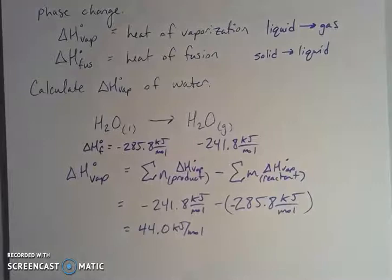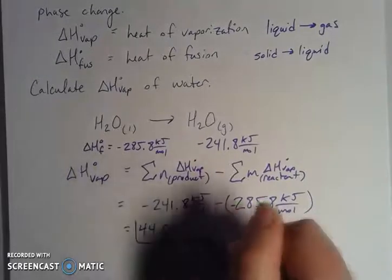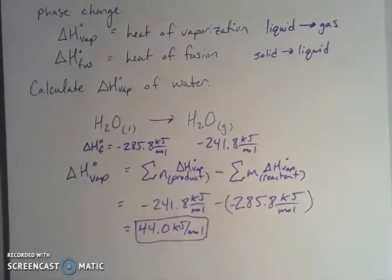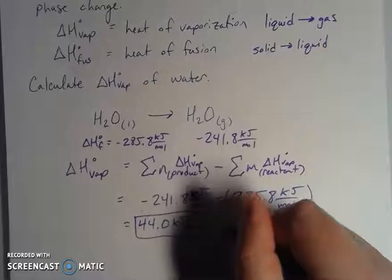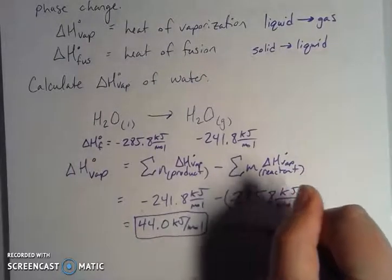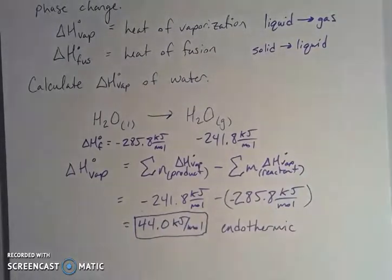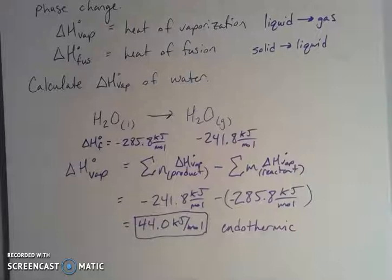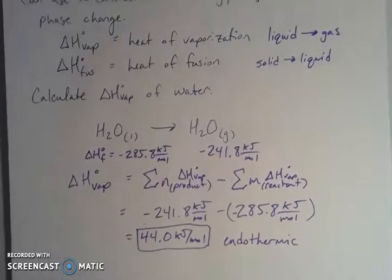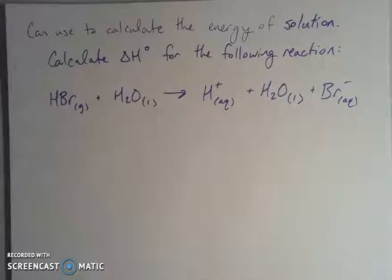For significant figures, I'm looking at the tenths place since we're adding or subtracting — the lowest number of decimal places. Because this is a positive value, this is an endothermic process, meaning I have to put energy into the system. That makes sense because you have to heat up water to get it to evaporate. So 44.0 kJ/mol is the amount of energy needed to convert one mole of liquid water into one mole of gas. These values come from the thermodynamic table.